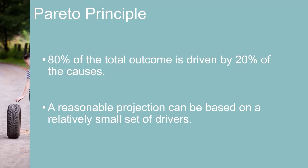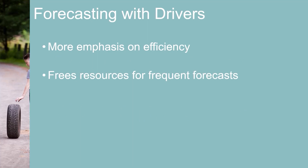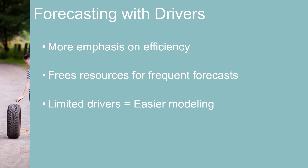The implication is that a reasonable projection can be based on a relatively small set of drivers. Forecasting with drivers places more emphasis on planning efficiency than traditional budgeting. Data efficiency frees up resources for more frequent forecasts. Limited drivers also allow easier modeling of scenarios and sensitivity testing. Companies must balance the accuracy gained from detailed analysis and the accuracy gained from timeliness. Annual budgets gain small marginal increases in accuracy from detailed analysis, while sacrificing large amounts of accuracy and relevance from timeliness.